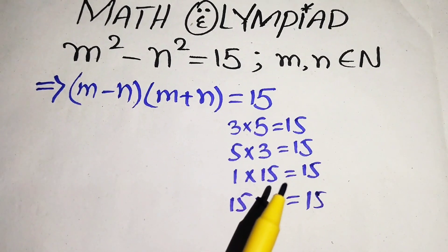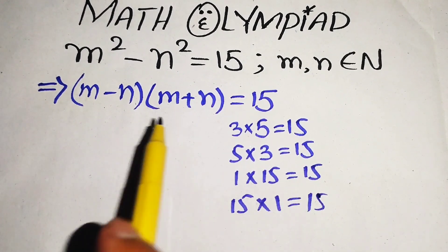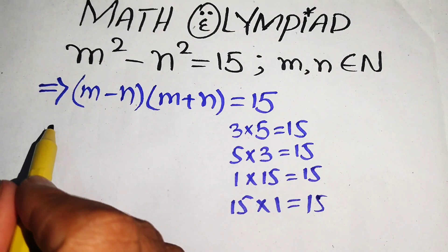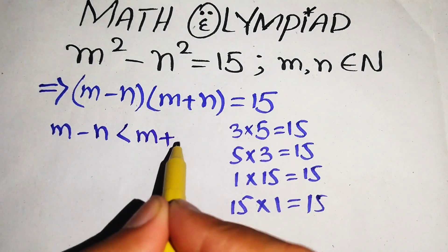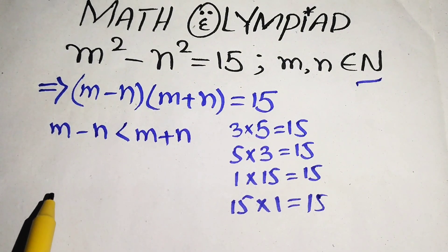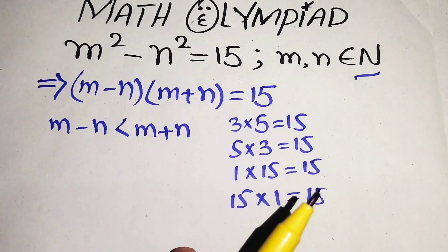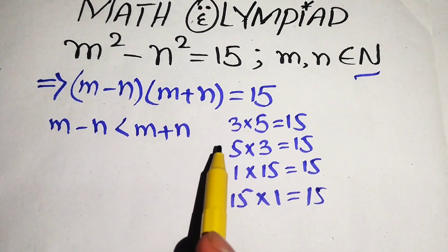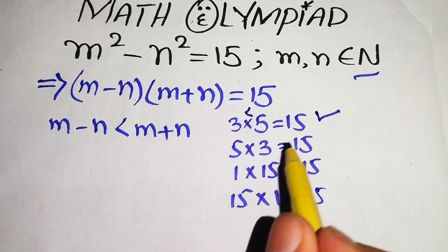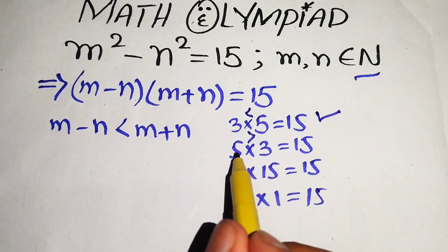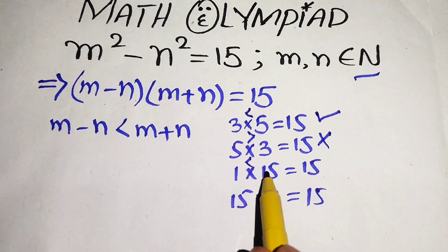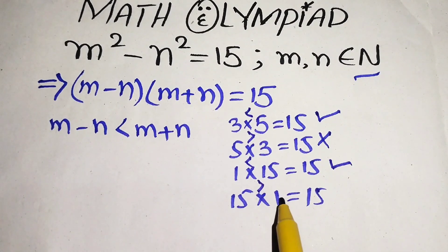Now we choose the possible cases that satisfy our given statement. Since m and n are natural numbers, m minus n is always less than m plus n. So we choose only those pairs where the first number is less than the second. For 3 and 5: 3 is less than 5, so this is a valid case. For 5 and 3: 5 is greater than 3, so we reject it. Similarly, 1 is less than 15, so we keep that pair, and we reject 15 and 1.